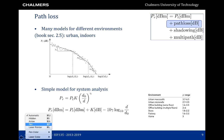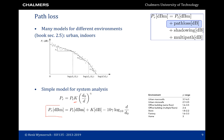For path loss there exist many models depending on the environment in which measurements were taken. The most simple model is the single-slope model, where the received power is a function of the transmitted power times some constant and d to the minus gamma, normalized with some reference distance d0. An important parameter is the path loss exponent, which relates to the slope. This exponent depends on the specific propagation environment and can range from very small values — even less than two — to very large values up to six or seven in urban macro cells.